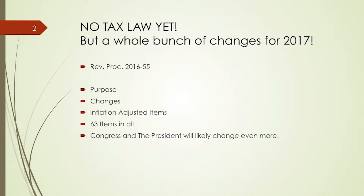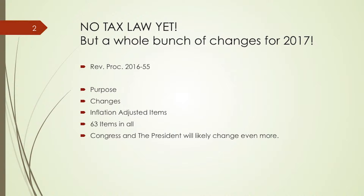As of today, we want you to know that there has not been a tax bill passed yet, but there were a whole bunch of changes for 2017. Those changes are contained in Revenue Procedure 2016-55. You can find that on the IRS website and print off a copy of that booklet. It's 30 pages, front to back, double-spaced. We'll go over the purpose of the changes, the changes themselves, and the inflation-adjusted items that we see.